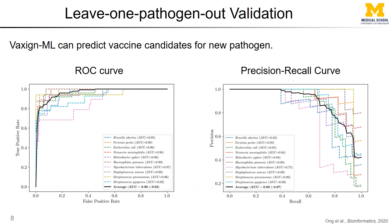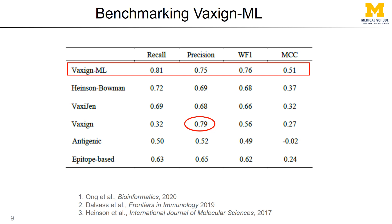We also developed validation tools. This new packaging-out validation tool shows that our Vaxign-ML prediction method performs very well. We did benchmarking with other programs and found that Vaxign-ML has the best recall, weighted F1 score, and MCC score. The precision score is second best — the best precision belongs to Vaxign itself — but Vaxign achieves that highest precision at the expense of other scores, especially recall.